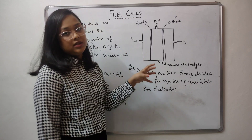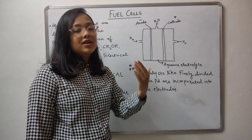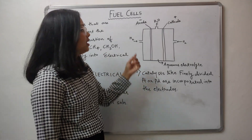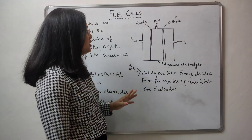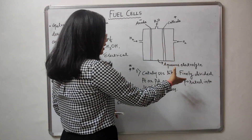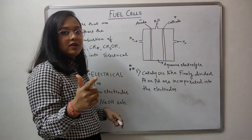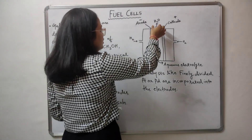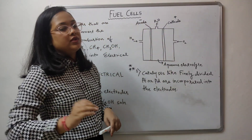The most commonly used fuel cell is the dihydrogen-dioxygen, that is the H2-O2 fuel cell. Since we're dealing with an H2-O2 fuel cell, there will be two inlets — one for dihydrogen and one for dioxygen — and then an outlet for the final product, water. This is how the H2-O2 fuel cell is constructed.